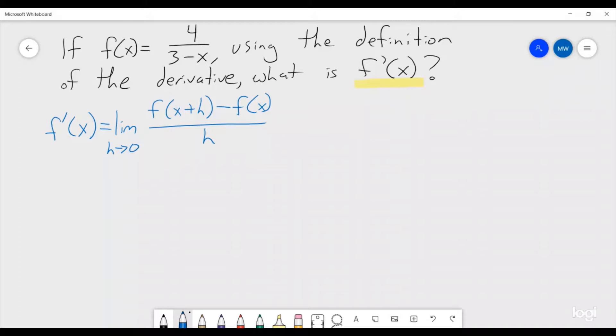So, let's just plug in x plus h and x into this formula and see what we're ending up getting. This is the limit as h goes to 0 of 4 divided by 3 minus x minus h minus 4 divided by 3 minus x all over h.